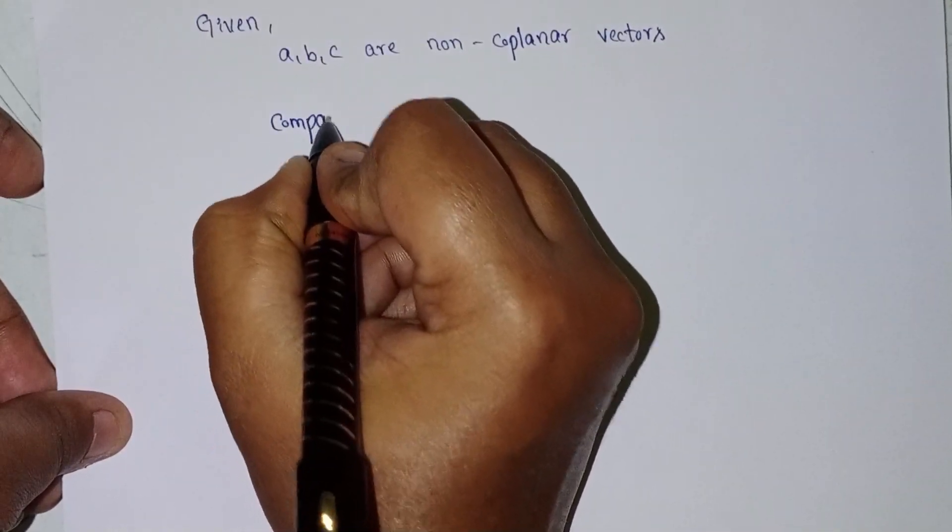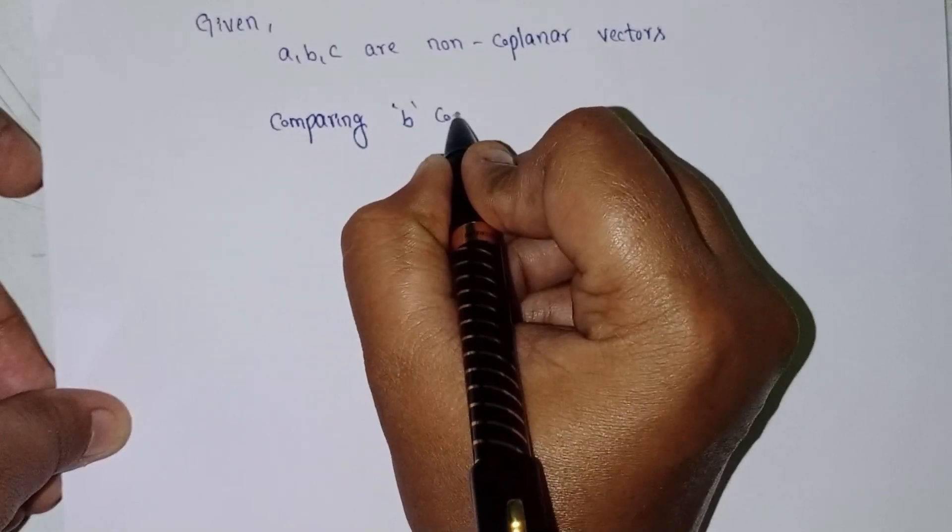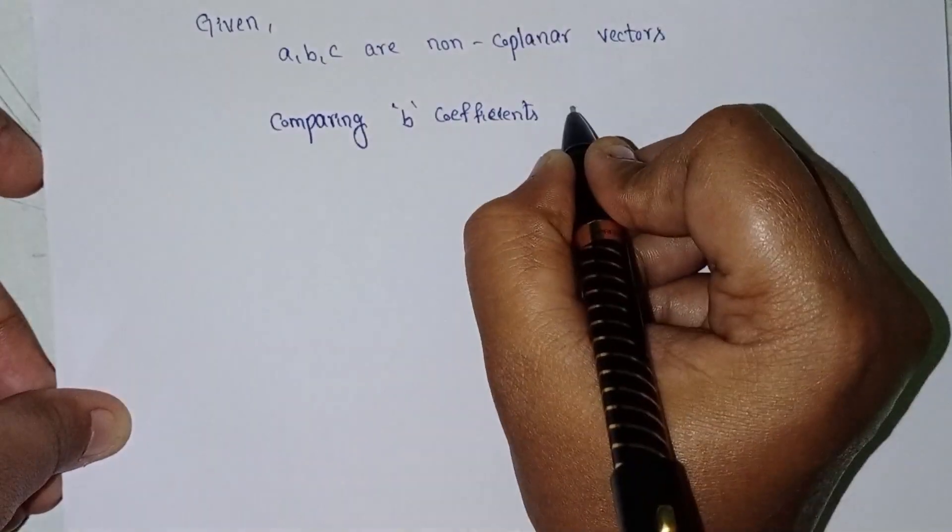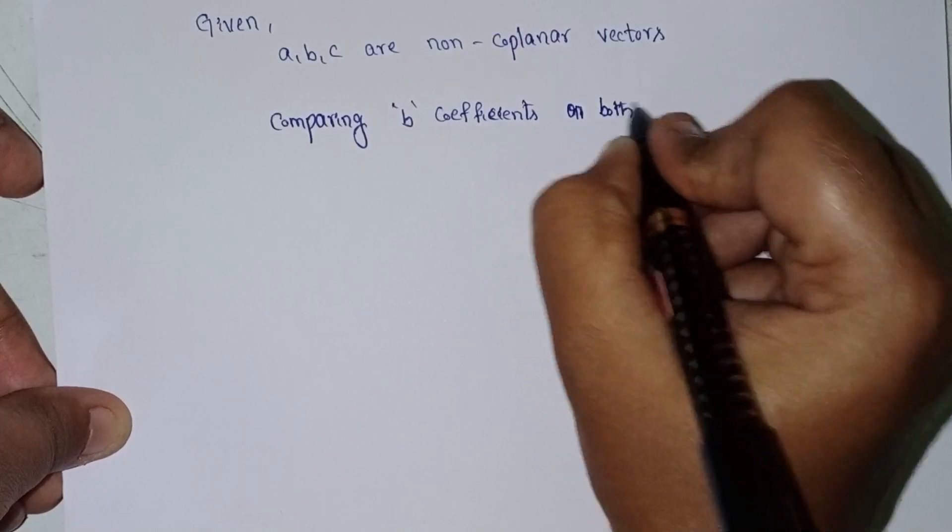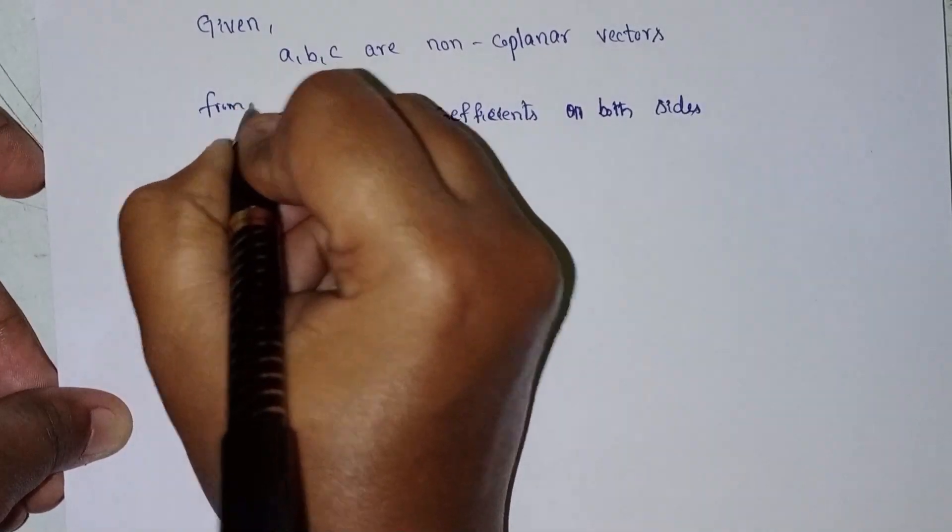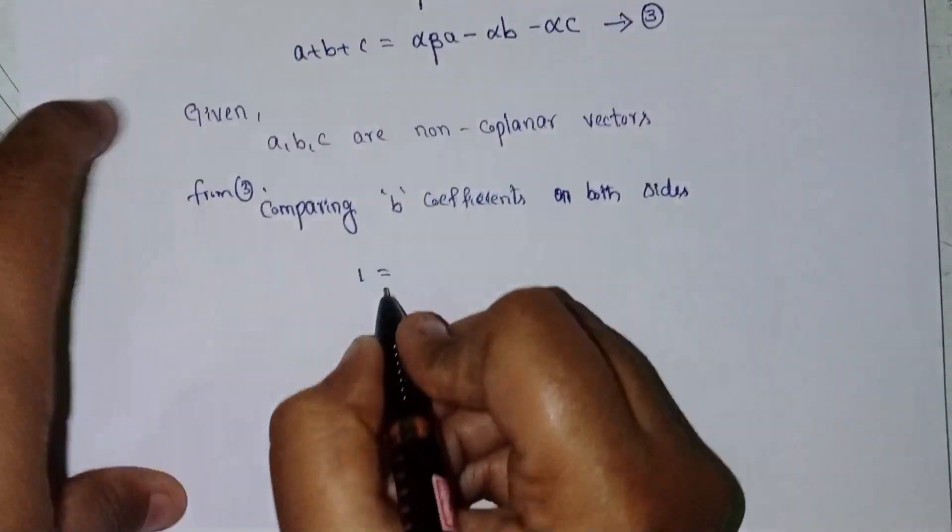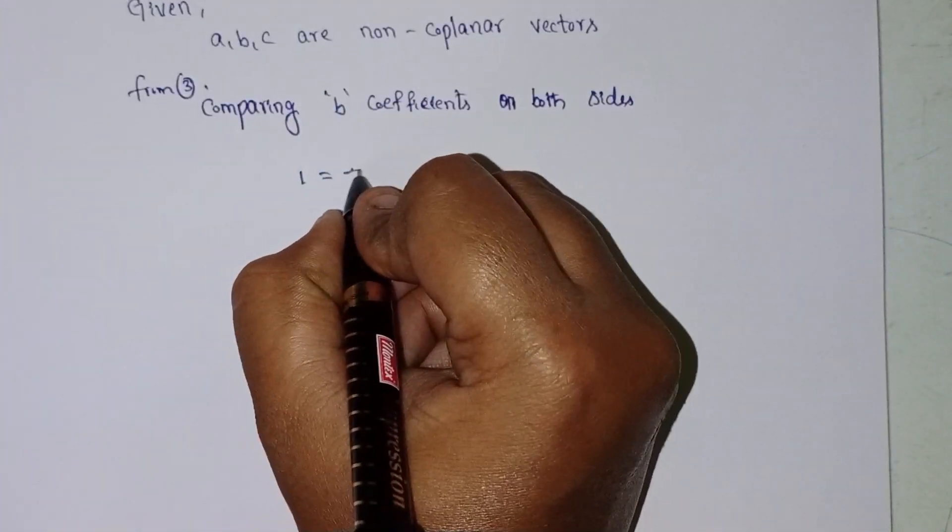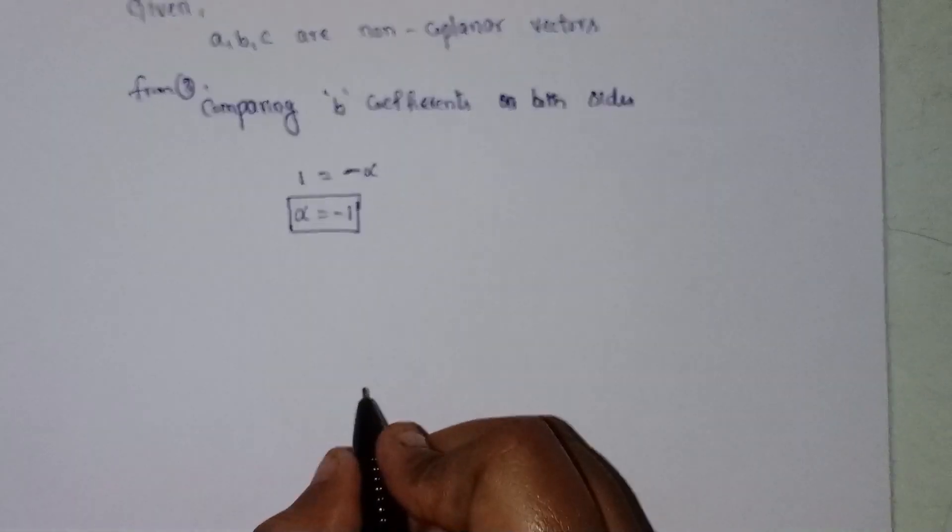Now, comparing the b coefficient on both sides from equation 3, we get 1 equal to minus alpha. That means alpha equal to minus 1.